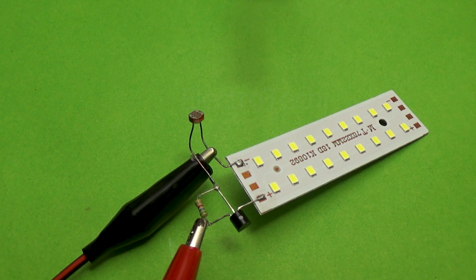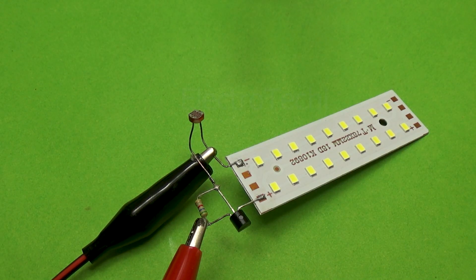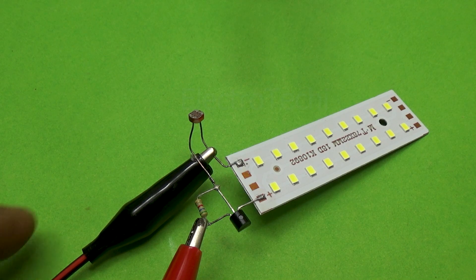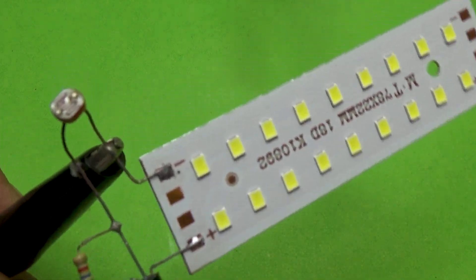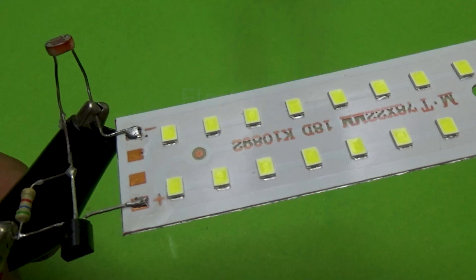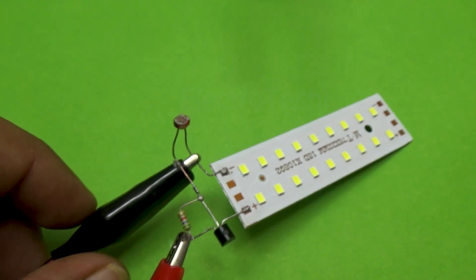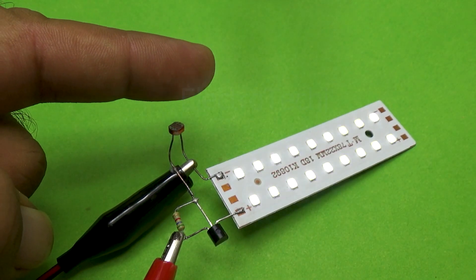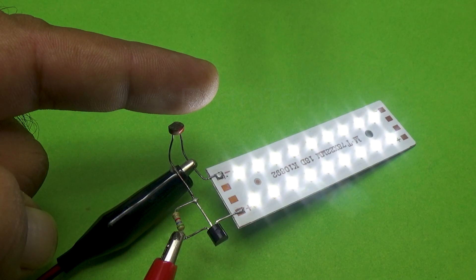You can even adjust the sensitivity by replacing the 5.6K resistor with a variable resistor, such as a 10K potentiometer. This lets you fine-tune how dark it needs to get before the LED turns on. We will definitely build this project in the future so that we can control its sensitivity. This simple setup demonstrates two key concepts in electronics.